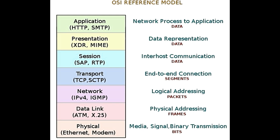Presentation layer: Its main function is to convert the data into a format that could be easily recognized by the application layers of other end users. Compression/decompression, conversion, encryption/decryption, and coding/decoding are some of the tasks undertaken. Thus, this layer converts the data obtained from the application layer into a format that can be easily identified by other network layers.